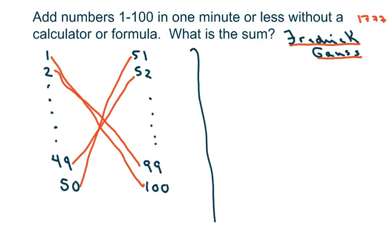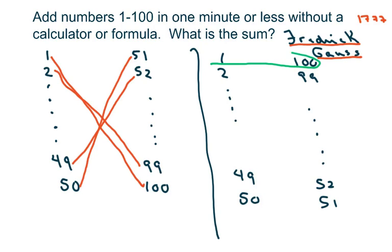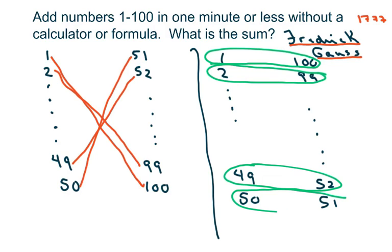And actually a better way to write this would have been 1, 2, all the way down to 49, 50. And then go across and write 51, 52, and then go to 99 to 100. At this point, what you could do is just go across. That's 101, 101, 101, 101, and 101.